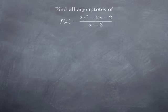Now let's apply this to finding asymptotes. Consider the function f(x) = (2x squared minus 5x minus 2) divided by (x minus 3). For vertical asymptotes, they can only occur at zeros of the denominator — here x equals 3. At x = 3, the numerator evaluates to 18 minus 15 minus 2, which equals 1, a non-zero value, while the denominator approaches 0. Therefore x equals 3 is a vertical asymptote.